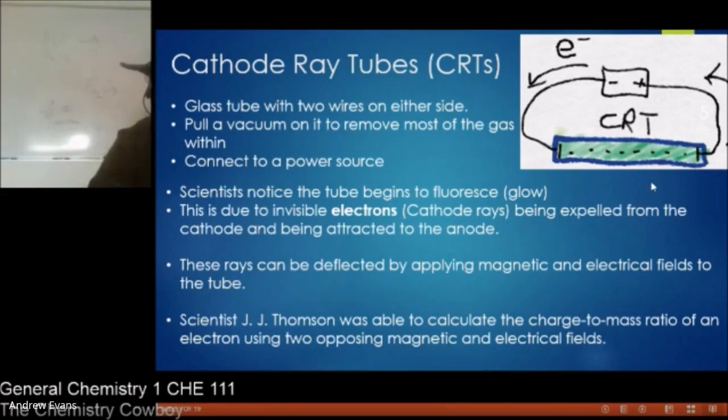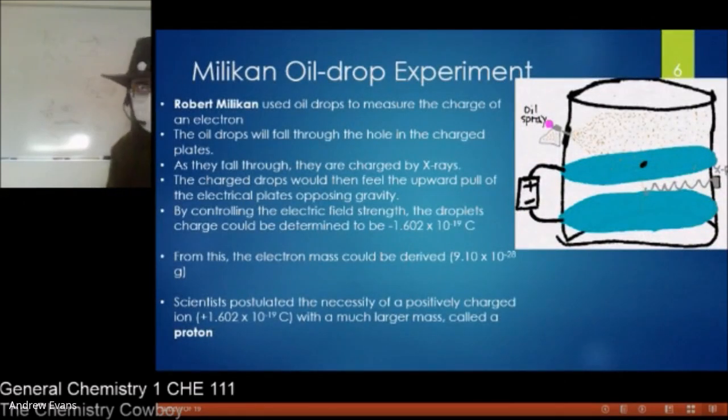So he finds, here's a fundamental property of these cathode rays. That's the main thing. He found a fundamental property, the charge-to-mass ratio. By itself, not too useful, though. Which is where we get to Millikan.